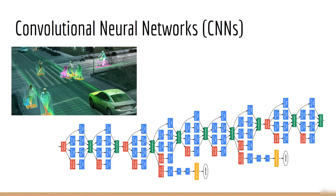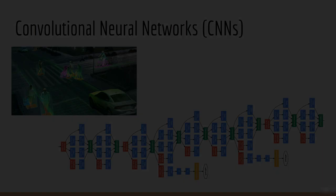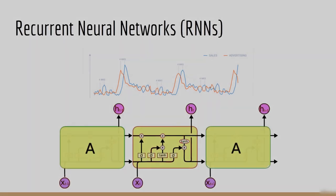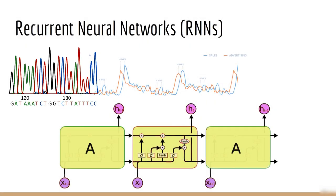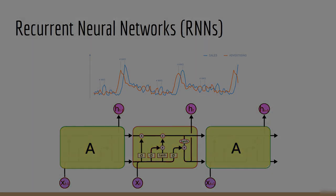Next, we're going to look at convolutional neural networks, which are specialized neural networks for computer vision. Then we'll look at recurrent neural networks, which are specialized neural networks for sequence data, such as time series, text, speech, and DNA.